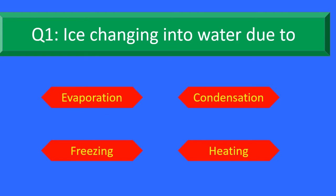Question number 1. Ice changing into water due to — Option A: Evaporation, Option B: Condensation, Option C: Freezing, and Option D: Heating.